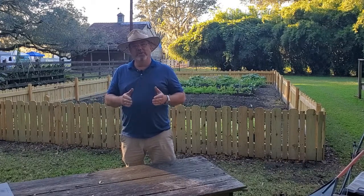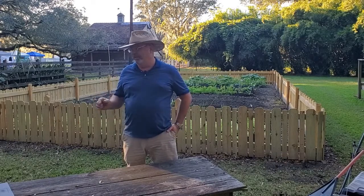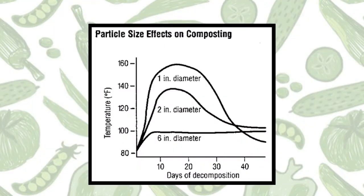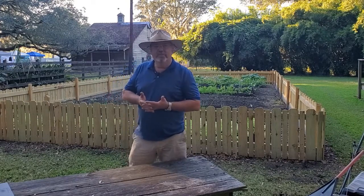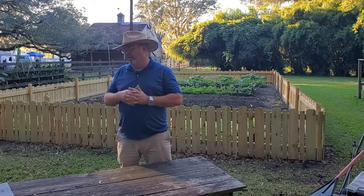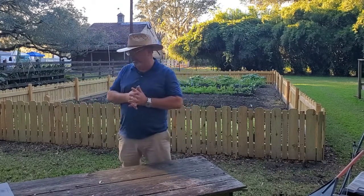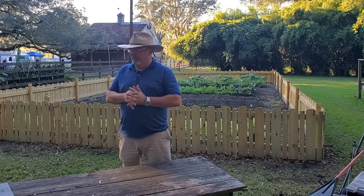If you look at this chart, you'll see that particle size matters when dealing with decomposition in the compost pile. The left axis covers temperature and the bottom axis covers days to decomposition. If you have something that's six inches in diameter — like a large limb — it will get up to maybe a hundred degrees, basically ambient temperature, and the decomposition just kind of continues without ever reaching a finished product within the 40 days shown on the chart.